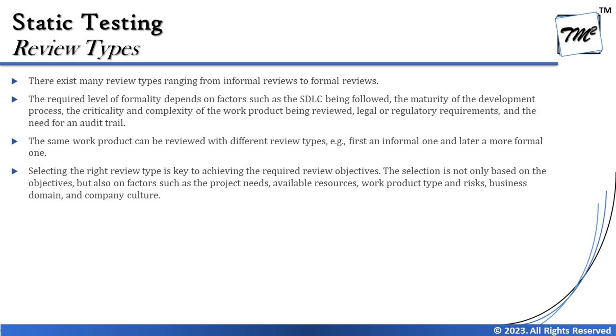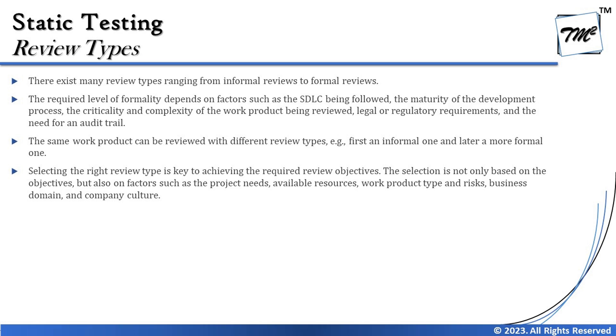All these factors should be taken into account by any team or organization to select what type of review to follow. The same work product can be reviewed with different review types — initially you can start with informal and later have a more formal review as well. Selecting the right review type is key to achieving the required review objective; you should be selective about what you need to do for which document. The selection is also based on factors such as project needs, available resources, work product types, risk, business domain, and company culture.